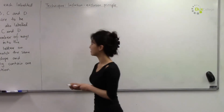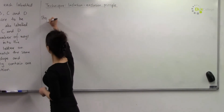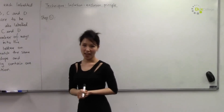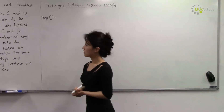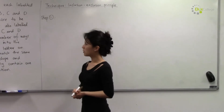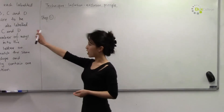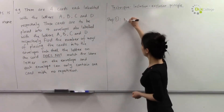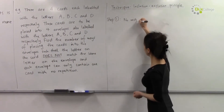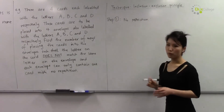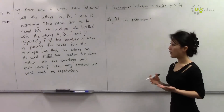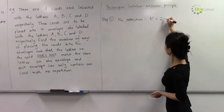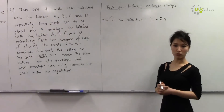Step one is to calculate the number of arrangements when you put four cards into four envelopes without any restrictions. When you put four cards into four envelopes without any restrictions, there are four factorial ways, which is 24 number of ways.